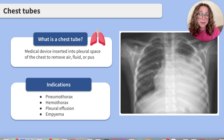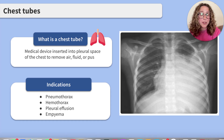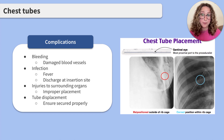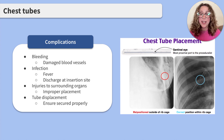These conditions include pneumothorax, hemothorax, pleural effusion, and empyema. Insertion and removal of a chest tube will be performed by an advanced practice healthcare provider, but as a registered nurse, it is important to be aware of a few complications that can occur with a chest tube and what to do in those scenarios.